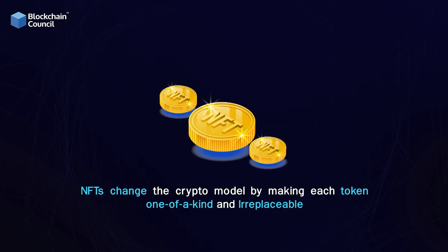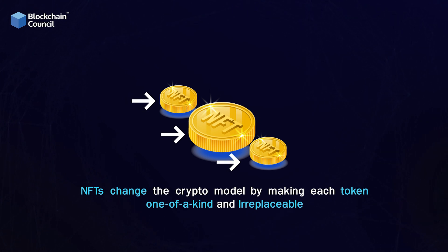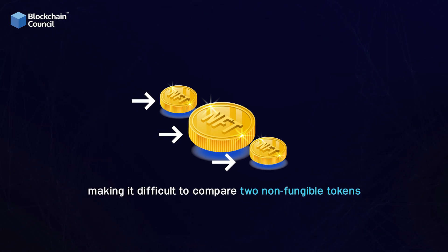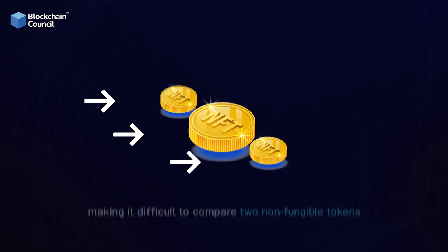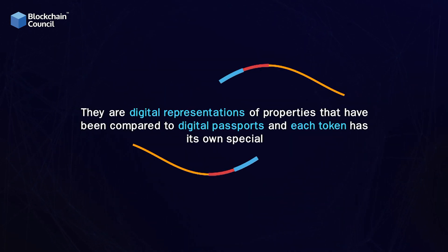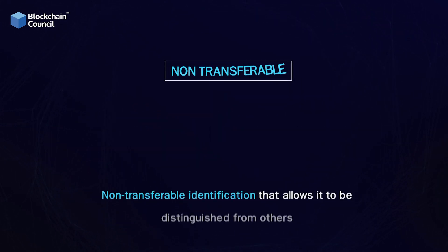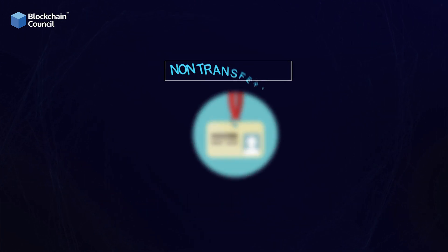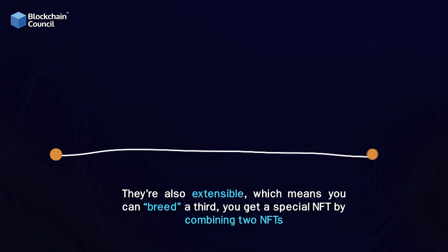NFTs change the crypto model by making each token one of a kind and irreplaceable, making it difficult to compare two non-fungible tokens. They are digital representations of properties that have been compared to digital passports, and each token has its own special non-transferable identification that allows it to be distinguished from others.